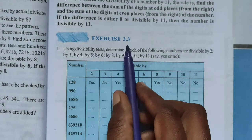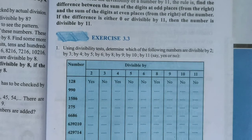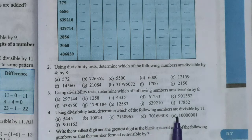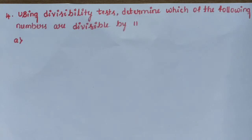Hi children, let us continue the exercise 3.3, chapter 3, playing with numbers. Question number 4: using divisibility test, determine which of the following numbers are divisible by 11. Divisible by 11 means find the difference between the sum of the digits at odd places from the right and the sum of the digits at even places from the right. If the difference is either 0 or 11, then the number is divisible by 11.